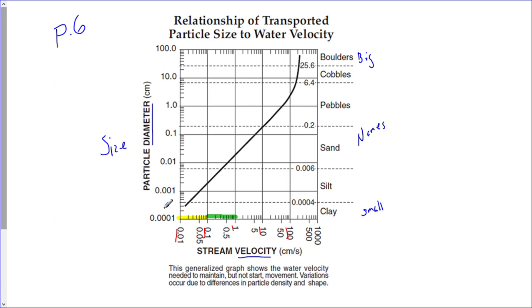It works the exact same way with the particle diameter size. If we take a look at right here, this area, we're going to start with 0.01. So this line here is 0.01. Now we go to 0.02, 0.03, 0.04, 0.05, 0.06, 0.07, 0.08, 0.09, 0.1.